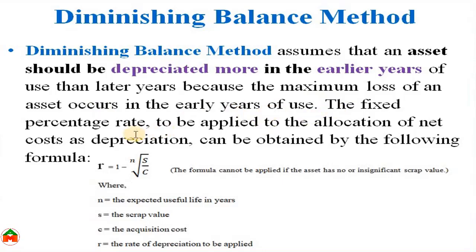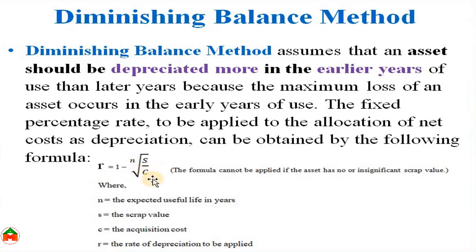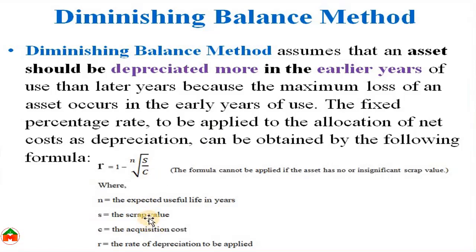The fixed percentage rate applied to allocate the cost of depreciation can be obtained by applying the formula: r = 1 minus the nth root of (s divided by c). Here, n indicates the number of years of estimated useful life of the asset, s indicates the scrap value of the asset — also known as salvage value or residual value — and c indicates the cost or acquisition cost of the asset.